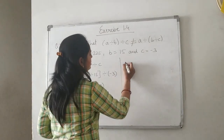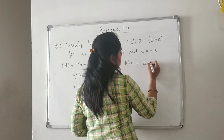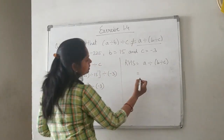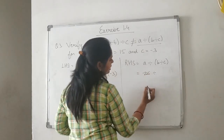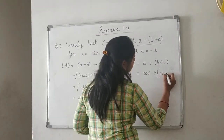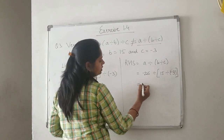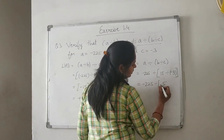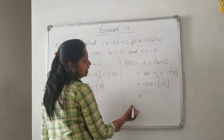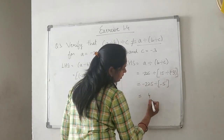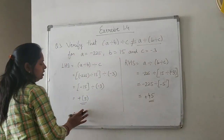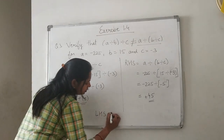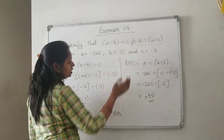Now see the RHS: A ÷ (B ÷ C). A is minus 225, and B ÷ C is 15 divided by minus 3, which gives minus 5. So minus 225 divided by minus 5 — both negative — gives positive 45. Although both answers carry a positive sign, LHS equals 5 and RHS equals 45, so LHS is not equal to RHS. Verified.